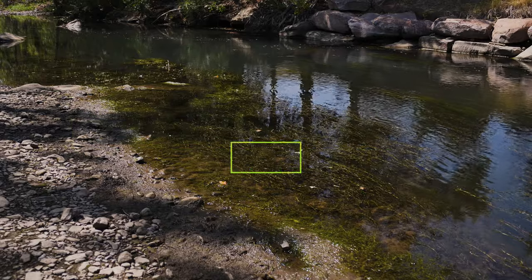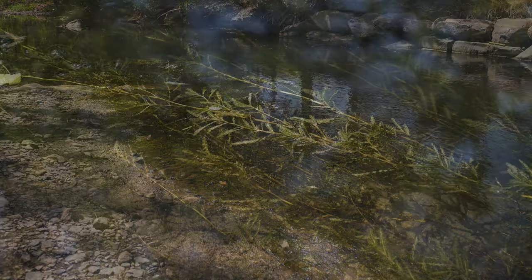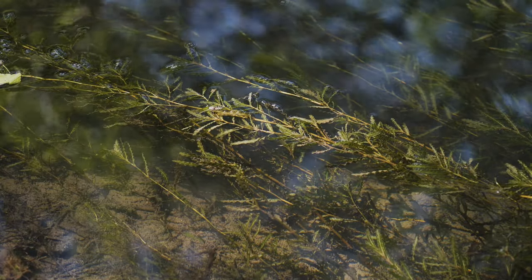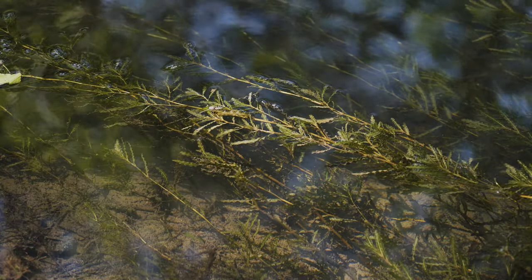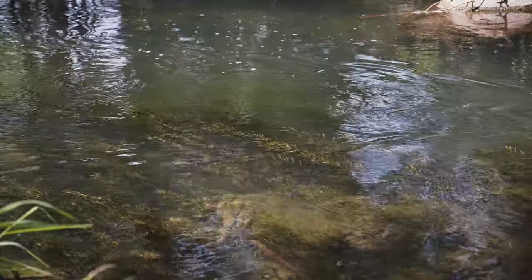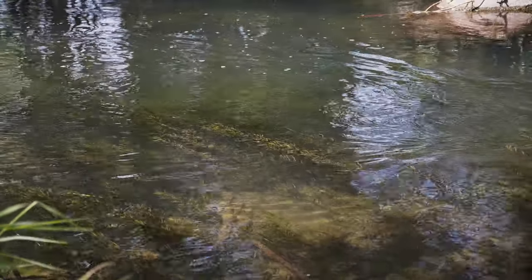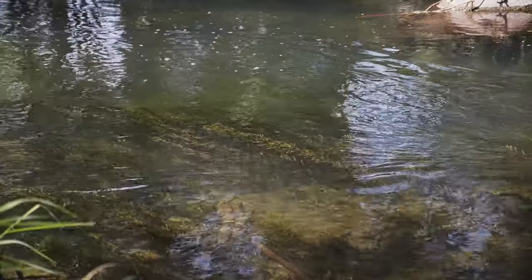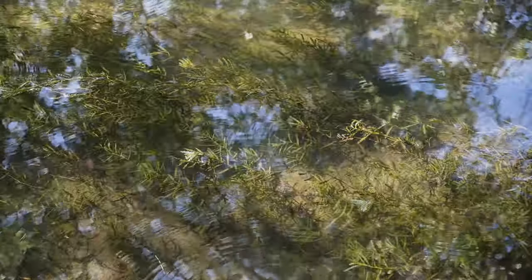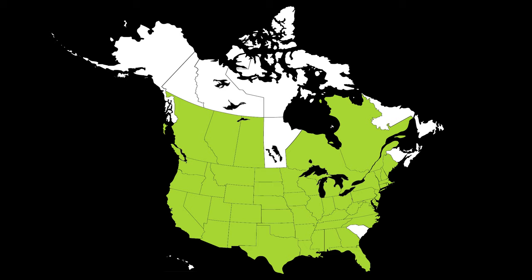Curly leaf pondweed is an aquatic weed that is native to Europe, Asia, Africa, and Australia. It was introduced into North America by 1840, possibly both accidentally with fish hatchery stock and intentionally via the aquarium trade. It is now widely established throughout most of North America.